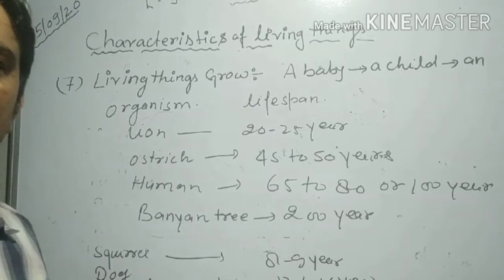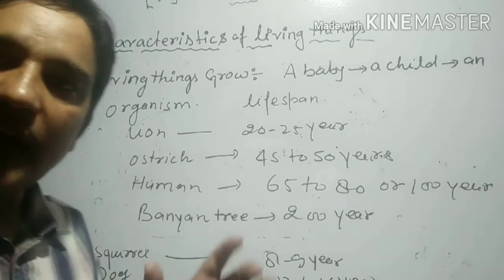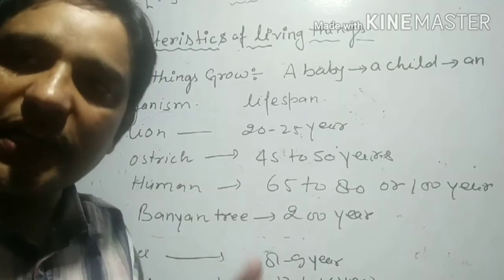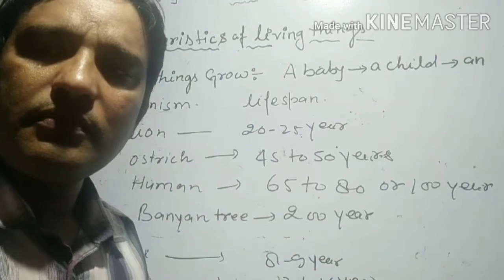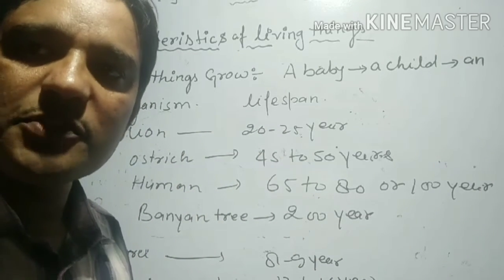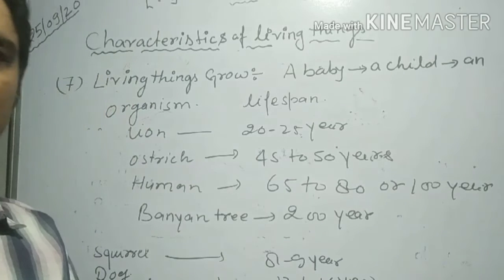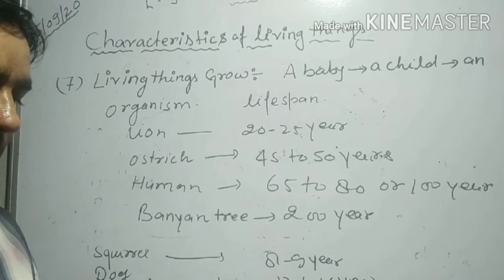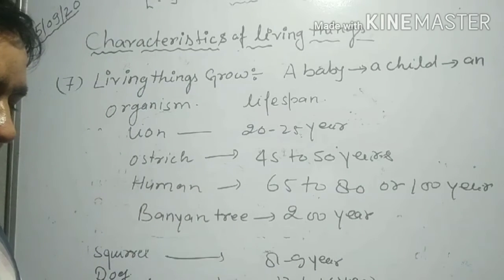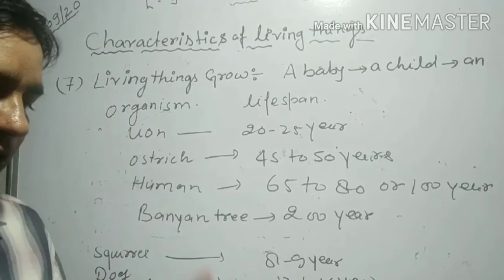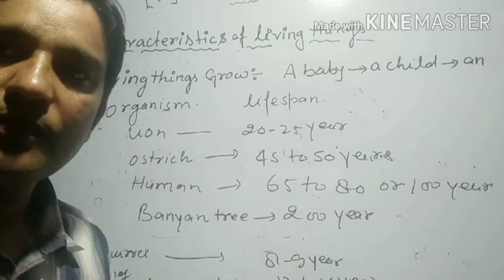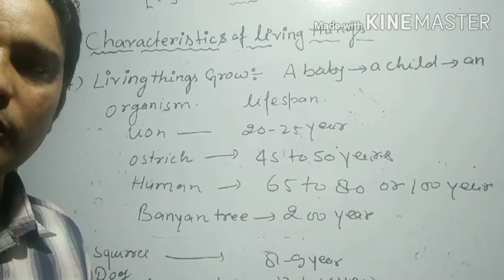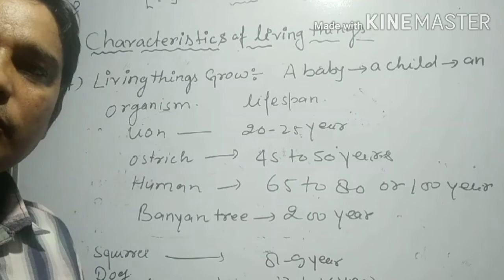So to summarize, the time period from birth to the natural death of an organism is known as the life span. As given in your book, the time period for which an organism remains alive is called its life span.